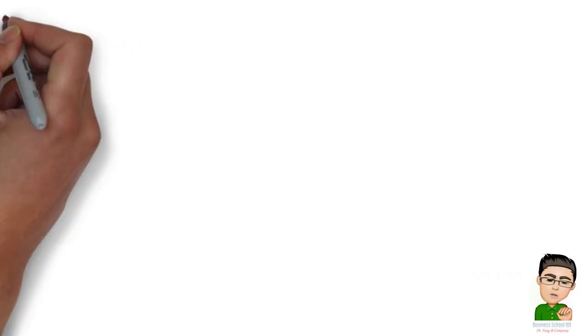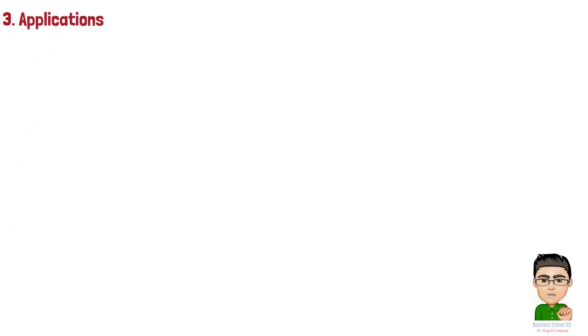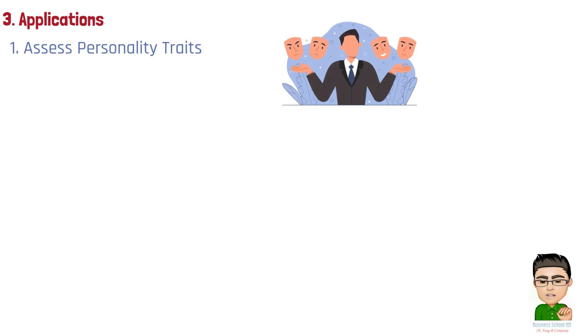Section 3. Applications. Here are 7 major applications of the Big 5 personality trait taxonomy. Number 1. Assess personality traits. Use personality assessment tools or techniques to evaluate the personality traits of team members. There are various validated questionnaires available that measure the Big 5 traits. This assessment will provide insights into each team member's level of openness, conscientiousness, extroversion, agreeableness, and emotional stability.